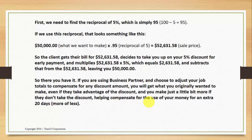So there you have it. If you're using Business Partner and choose to adjust your job totals to compensate for any discount amount, you will get what you originally wanted to make, even if they take advantage of the discount. And you make just a little bit more if they don't take the discount, helping compensate for the use of your money for an extra 20 days, more or less.